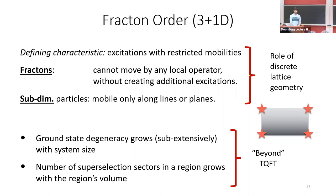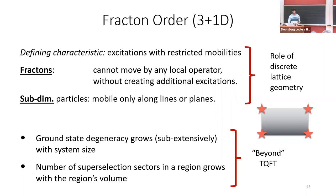The key distinction is that these are topological degeneracies — it's not symmetry protected. As far as we understand, these kinds of fracton models where the ground state degeneracy is topologically robust only exist in 3+1D. There's a proof by Haah for translation-invariant stabilizer codes that fractons can only exist in 3+1 dimensions. There are models in 2+1D where you can have excitations with restricted mobility, but there the ground state degeneracy can be lifted by local terms — I should distinguish between topological fractons and, for example, symmetry-protected ones.